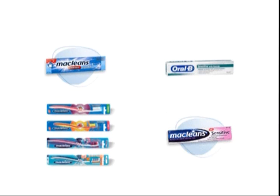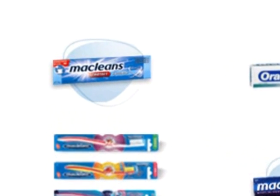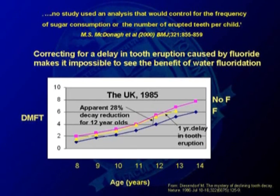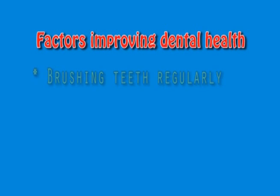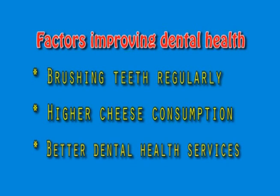In subsequent years, toothpaste started having fluoride added to it, and this has been shown to harden the teeth and reduce decay. However, communities without fluoride have also started having reduced rates of decay. Now it appears many factors have affected decay rates — not only more people brushing their teeth regularly, but increased cheese consumption, which has anti-decay properties, and better dental health services. In short, the decay rates have therefore declined primarily with the rise in people's standard of living.